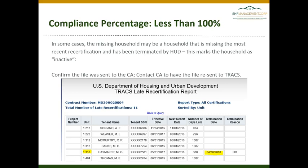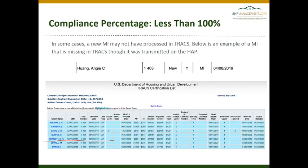You will need to contact your CA to confirm that they have received that file, and if not, resend that file to them. Another reason the compliance percentage may be less than 100 is that a move-in may not have processed in TRACS.